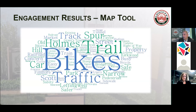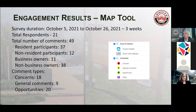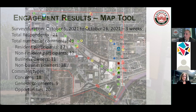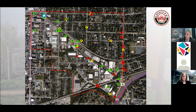From the map tool, we did a word cloud out of the comments we received. Keywords used quite a bit included bikes, trails, and traffic as the key items. The map tool had 21 total respondents who did 49 comments — some people had more than one. We've got a similar setup to last time in the map tool that you'll see if you log on to the city website and click the link. The green pins are opportunities, the red pins are challenges, and the yellow are just general comments.